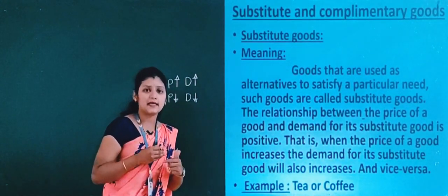Substitute goods are those goods which are used as alternatives, while complementary goods are those goods which are consumed together — like bike and petrol, car and petrol, tea and sugar, and pen and ink. These are all complementary goods.